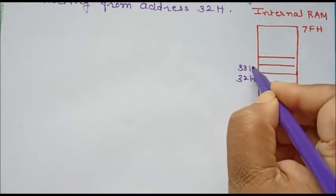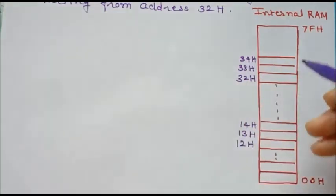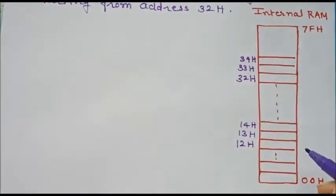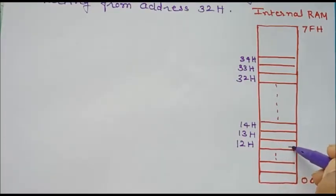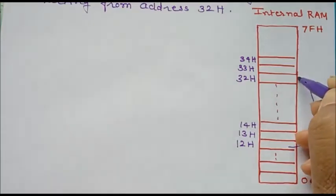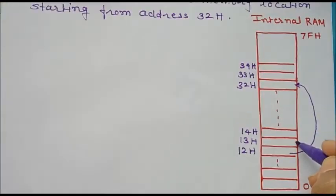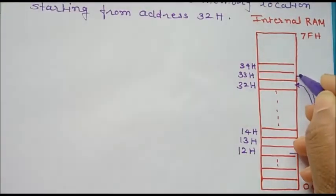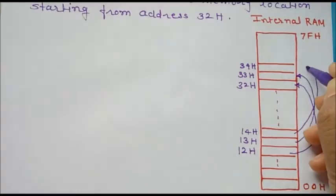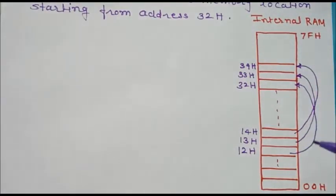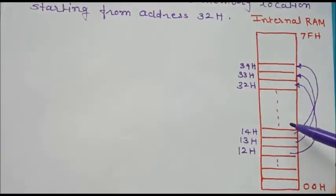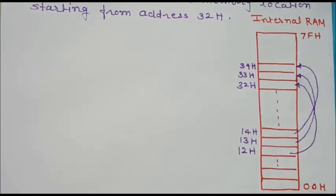The destination addresses are 32H, 33H, 34H, and so on — 10 bytes. We want to read data from the source address location and store it at the destination address location. Data at 12H should be stored at 32H, data at 13H should be stored at 33H, data at 14H at 34H, and so on. This process must be repeated 10 times to transfer all 10 bytes from source to destination.